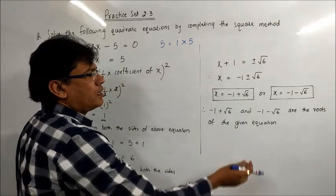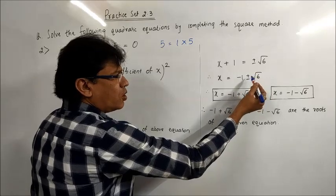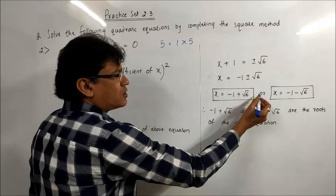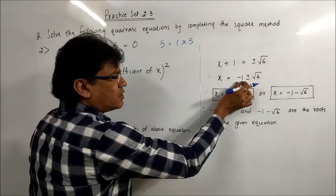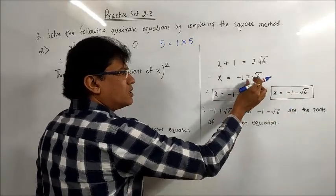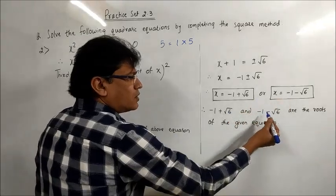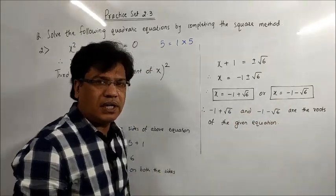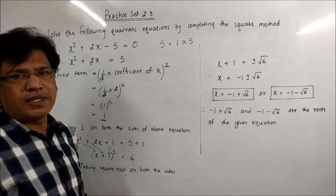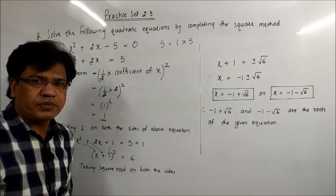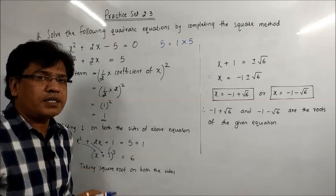This expression can be split into two values since √6 gives plus or minus. So x = -1 + √6 or x = -1 - √6. Therefore, -1 + √6 and -1 - √6 are the roots of the given equation. This is how we get the solution of a quadratic equation by the completing squares method. This was Problem 2; I'll now do Problem 4 and Problem 6.